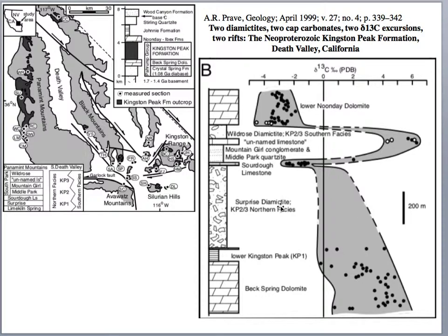Here's a map of some of the units in Death Valley. We're looking at the Beck Springs Formation, Kingston Peak Formation, and the Noonday Dolomite. Below that would be the Crystal Springs and Horace Thief Formation, which is a little older. These are part of the Pahrump Group, and the cap carbonate would be the Noonday Dolomite.